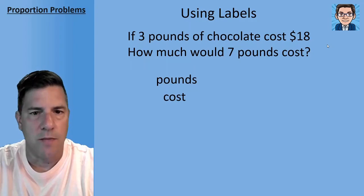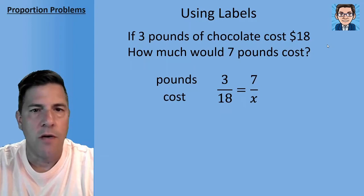Now it doesn't matter which way you do it, but it does matter that you're consistent. So I like to write the labels right out, pounds and cost, so that when I set up my proportion, I know to put 3 in the numerator because that's where I'm putting pounds and 18 is my cost, so that goes in the denominator. And that's set equal to 7 in the numerator because that's how many pounds and we don't know the cost.